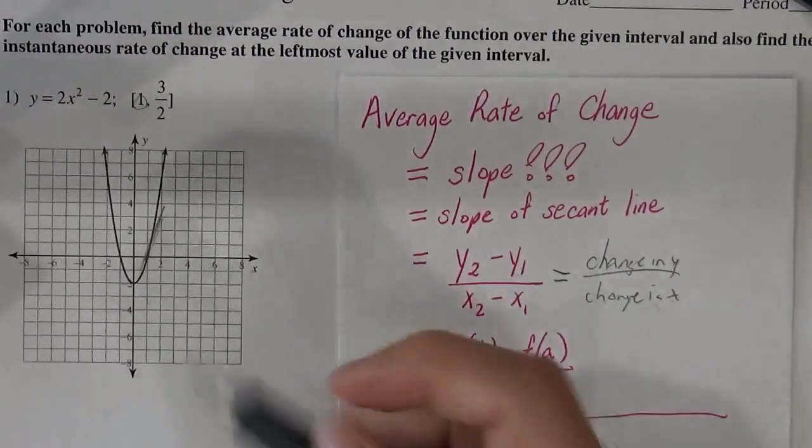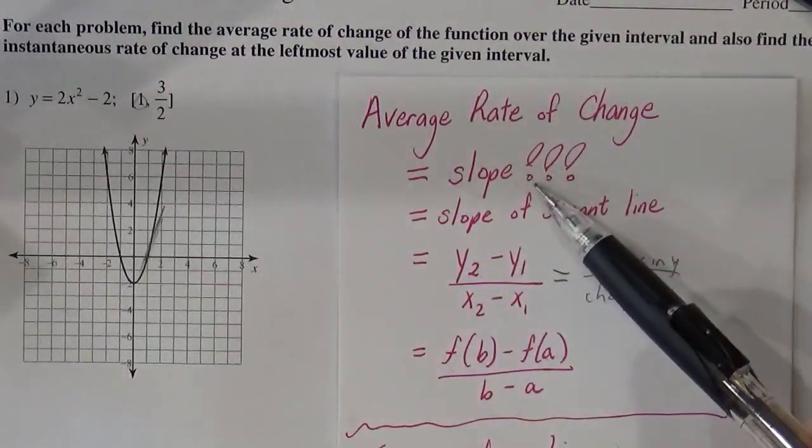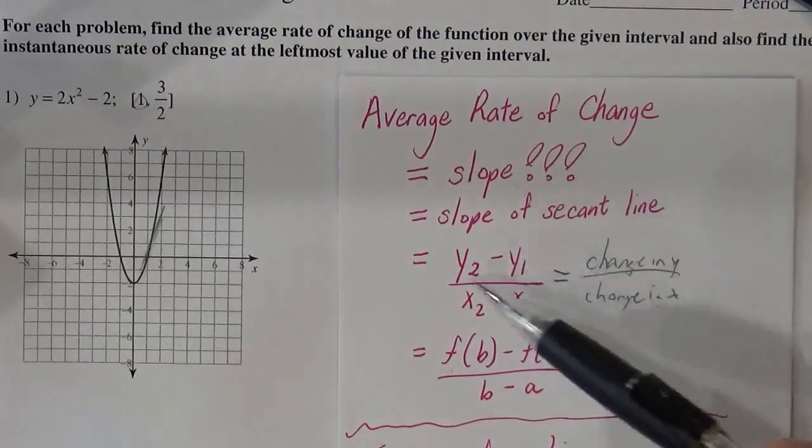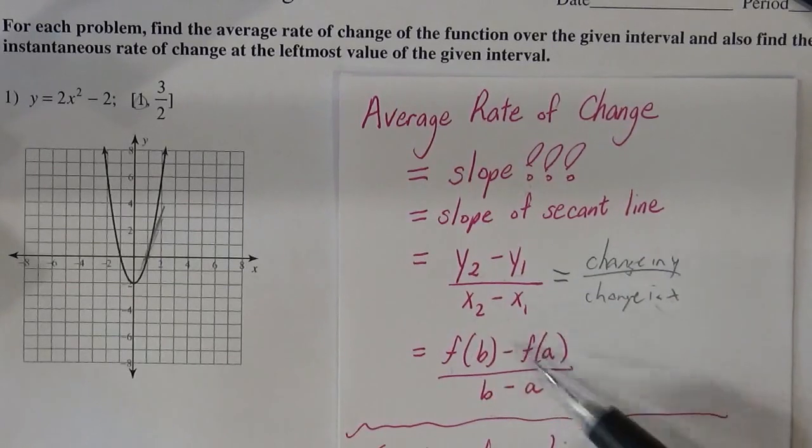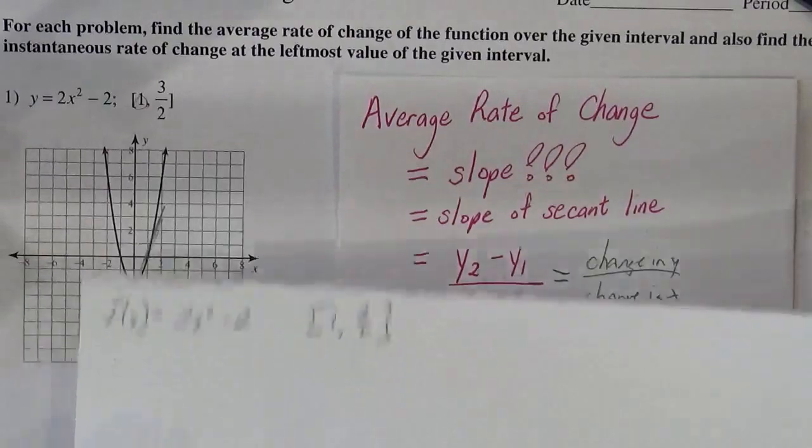So remember to find the slope of that line, it's just a slope. You just have to find y2 minus y1 over x2 minus x1. This is the scary formula for it there, but we'll do that first.